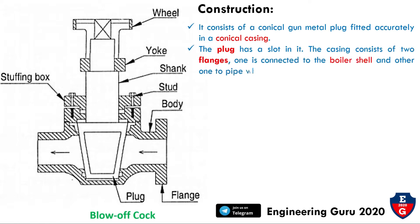The casing consists of two flanges. One is connected to the boiler shell and the other one to a pipe which takes discharge out of the boiler. In this figure we can see the plug and the flanges — one flange is connected to the boiler shell at one end, and the other pipe takes discharge out of the boiler.